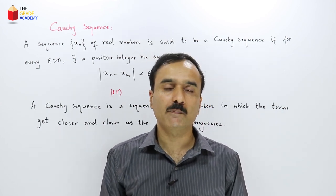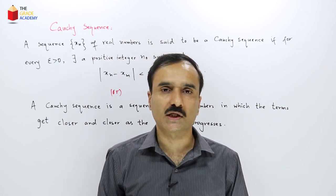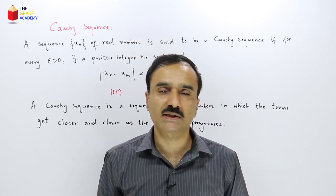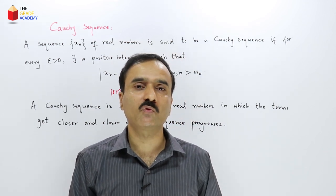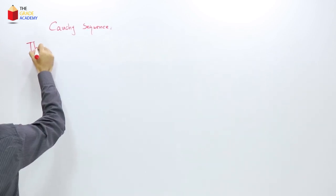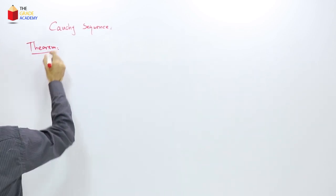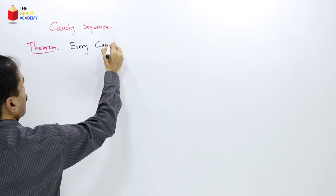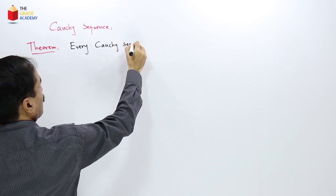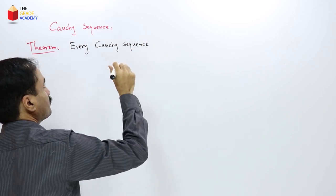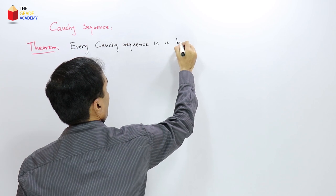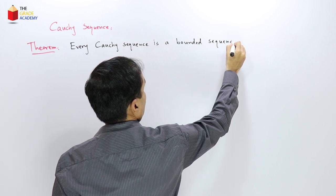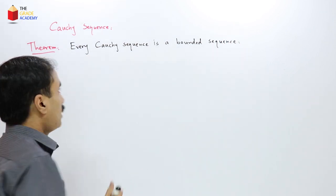Now we are going to state and prove an important theorem regarding a Cauchy sequence. That theorem tells us that every Cauchy sequence is always a bounded sequence. Let us state and prove this theorem.